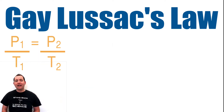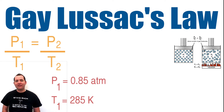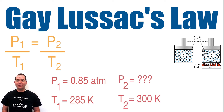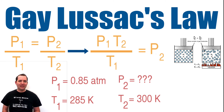The equation for Gay-Lussac's law is used to compare before and after scenarios of a gas. A gas in a container at a temperature of 285 Kelvin exerts a pressure of 0.85 atmospheres. If that gas is heated up to 300 Kelvin, what will its new pressure be? If we solve the Gay-Lussac's equation algebraically so that P2 is by itself and then substitute in each of our values, we can show that the new pressure will be 0.89 atmospheres.